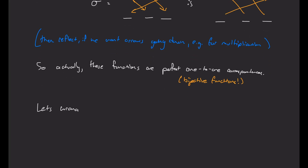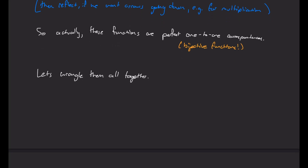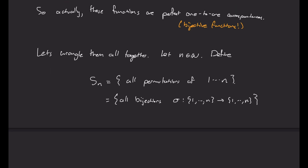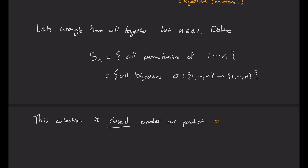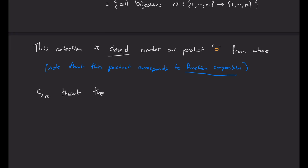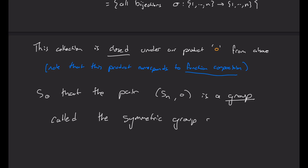So the next thing we want to do is wrangle all these together. Let's fix a natural number n and define S_n to be the collection of all permutations of 1 to n — that is, the set of all bijections sigma that map from the set {1, ..., n} to itself. I claim this collection is closed under our product: whenever I take two permutations and multiply them, the result is also a permutation. Note that this product corresponds to function composition. So the pair S_n with composition is a group, called the symmetric group of degree n.